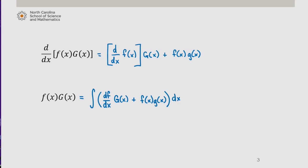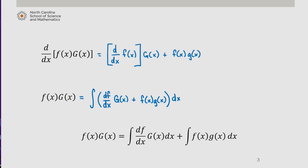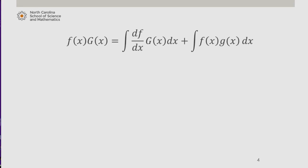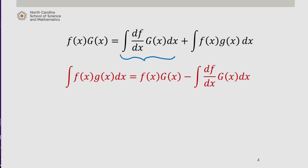According to rules of integration, we can express this as the integral of df/dx times capital G of x dx, plus the integral of f of x times g of x dx. Therefore, by subtracting this term from both sides, we find that the integral of f of x times g of x equals f of x times capital G of x minus the integral of df/dx times g of x.